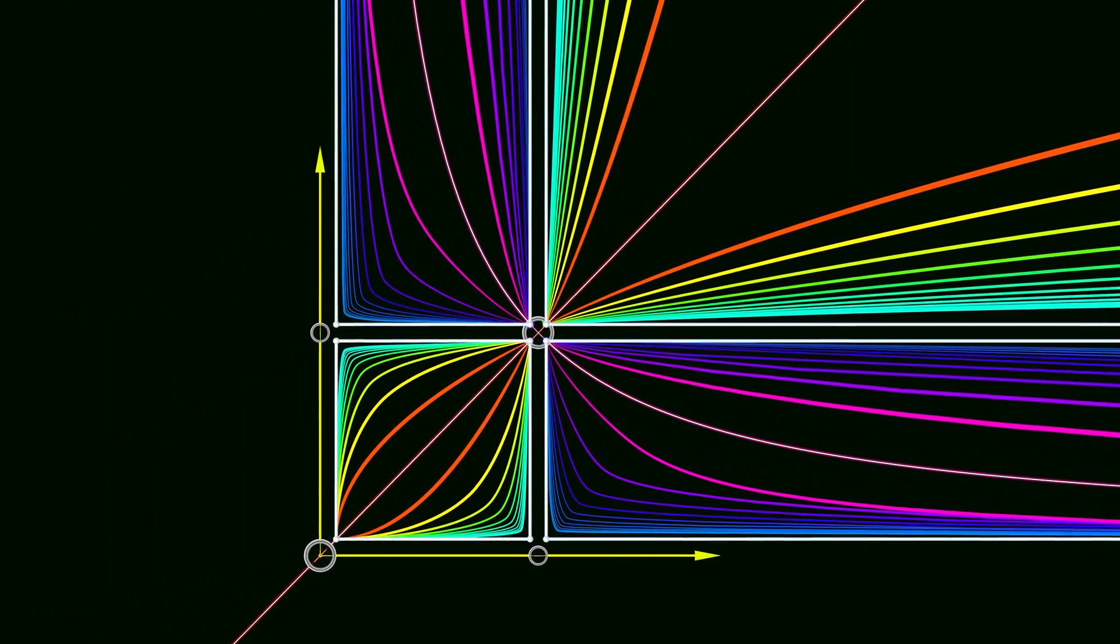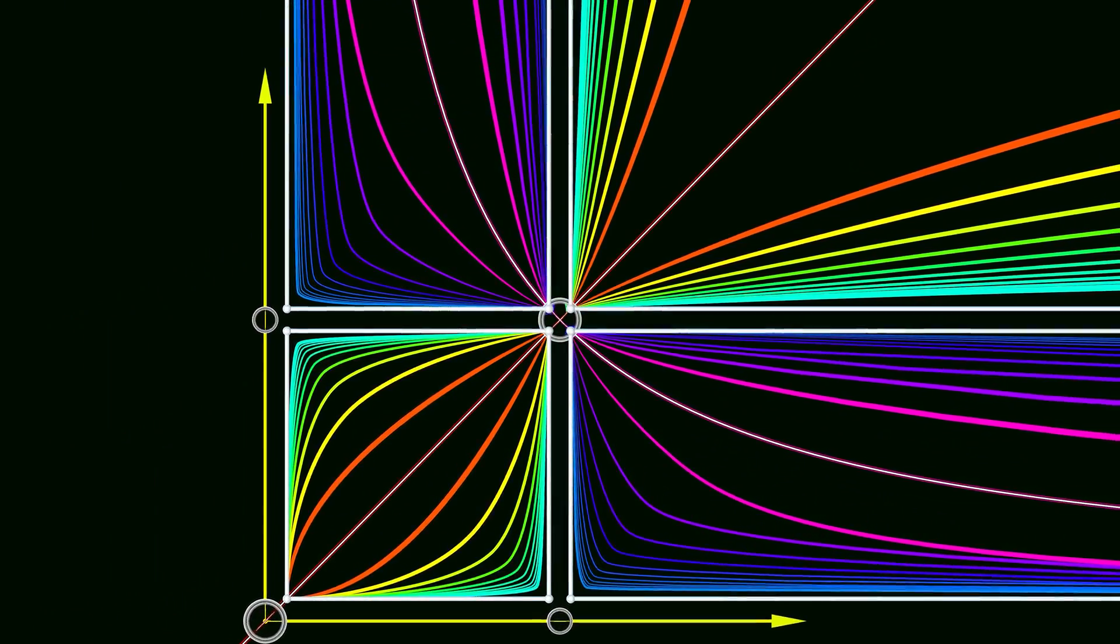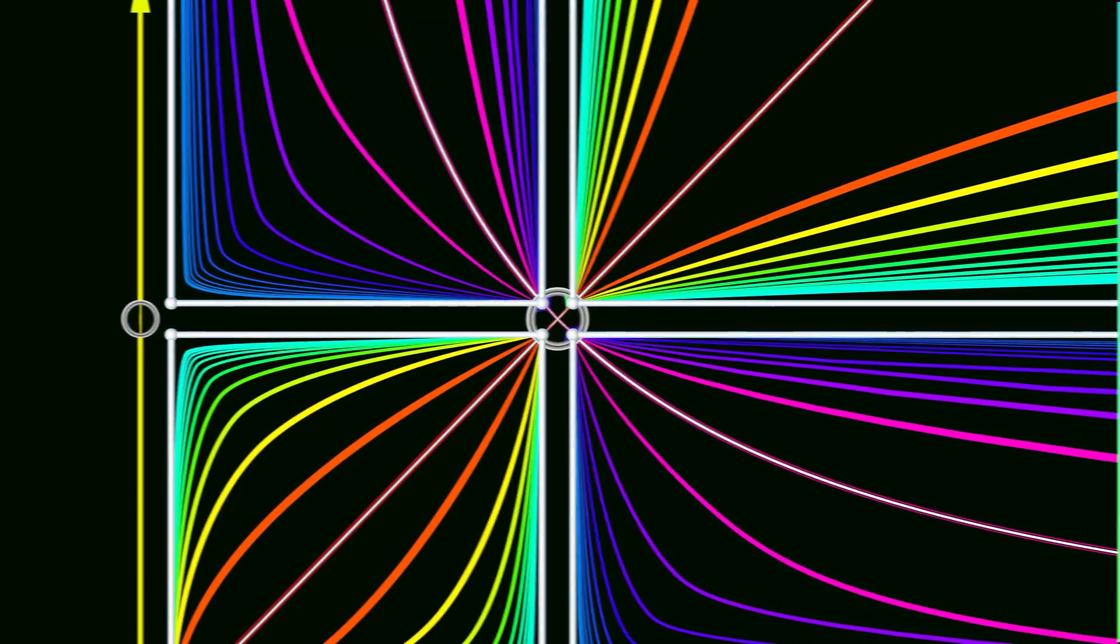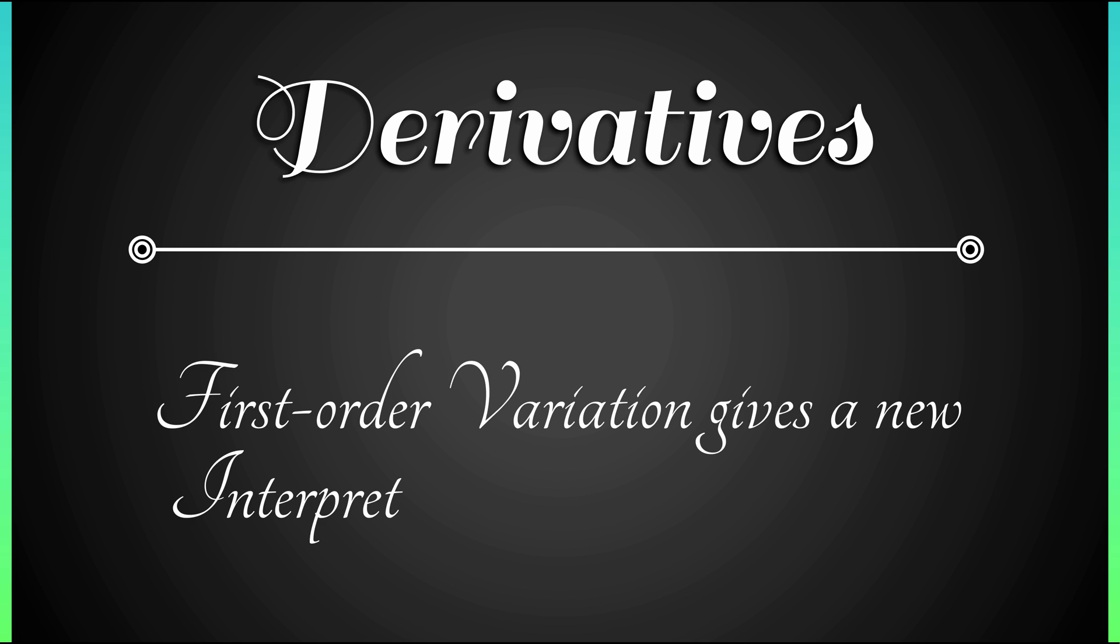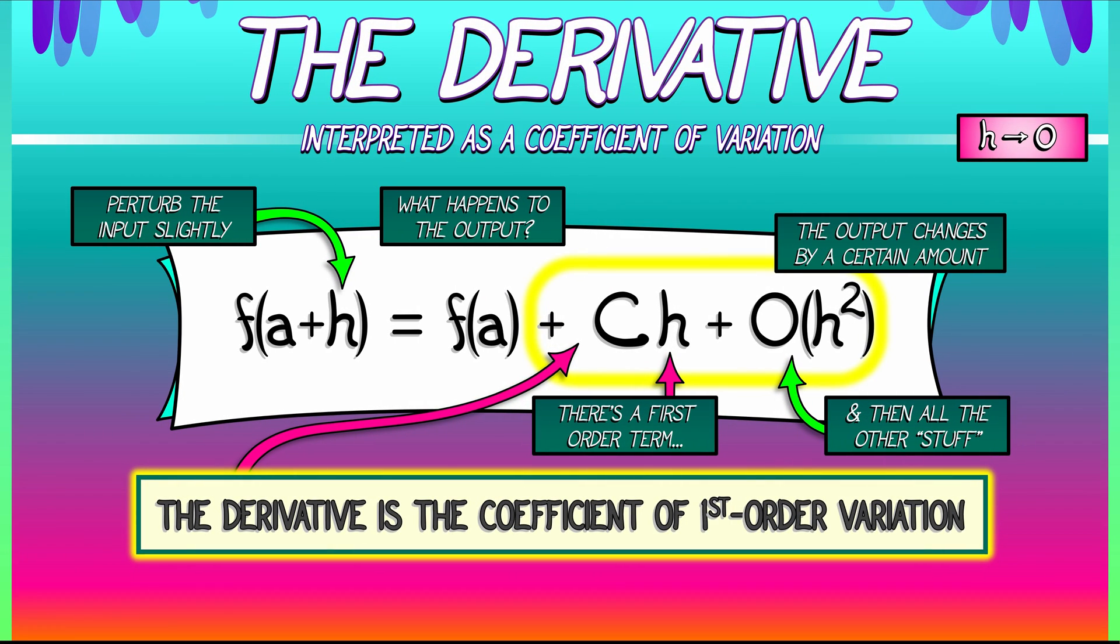The first hint of this comes in derivatives, where we used our understanding of asymptotics to give a new interpretation of the derivative as the coefficient of first-order variation. As you change the input just a little bit, you look at how the output changes. The derivative is that coefficient of first-order variation. All the other stuff is in the higher order terms, as regulated by Big O.